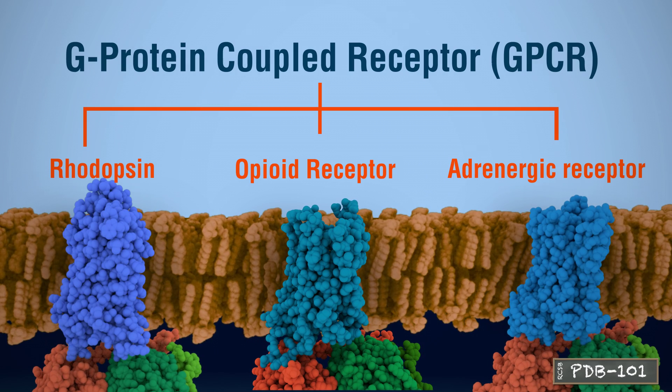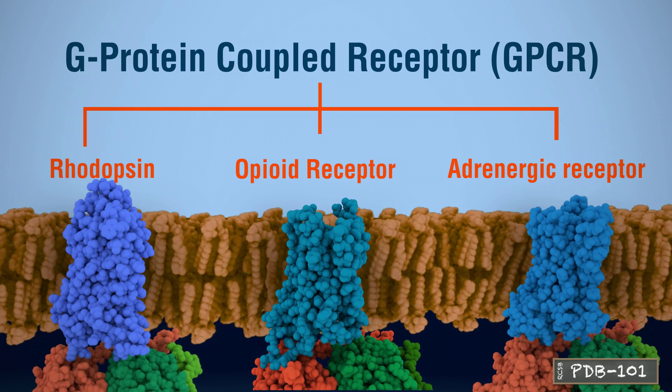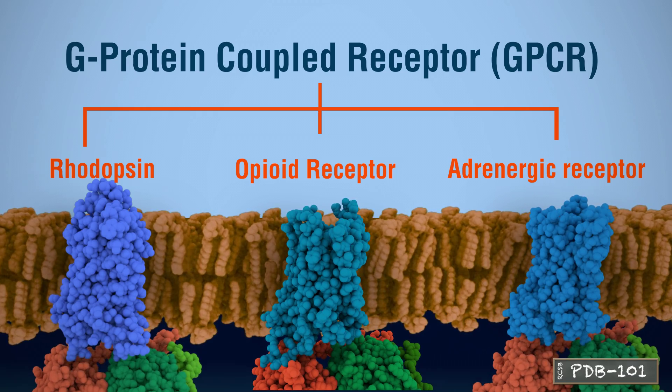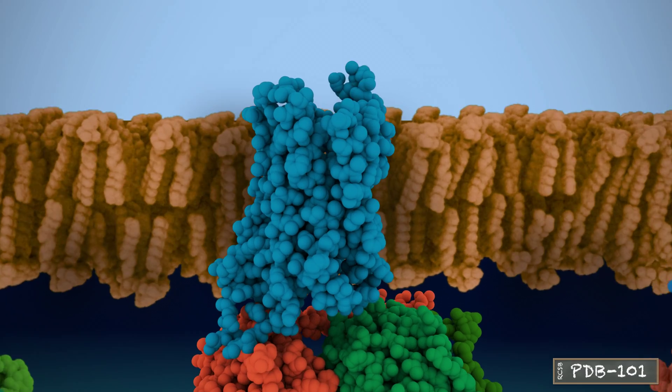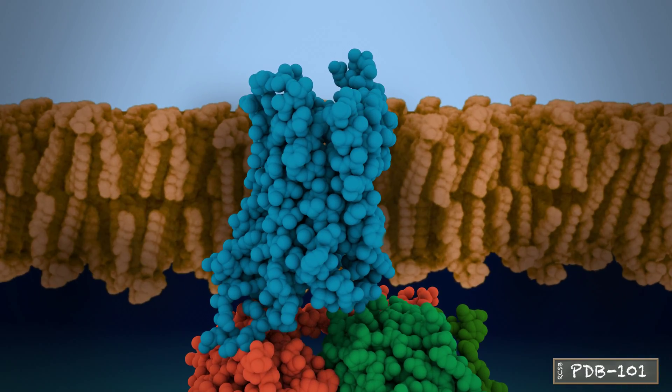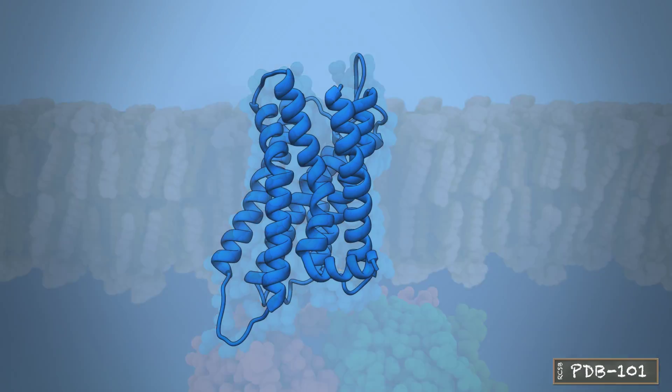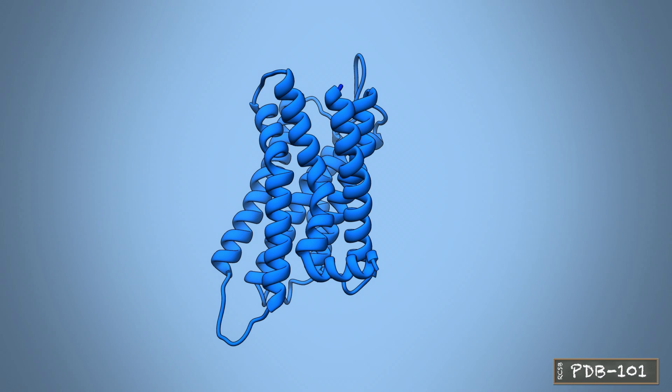G-protein coupled receptors, or GPCRs for short, are a large family of membrane-embedded receptors with structural features that have been preserved through the course of evolution. This model represents the shared architectural traits of GPCRs.